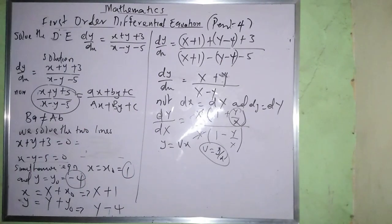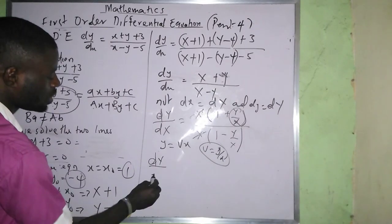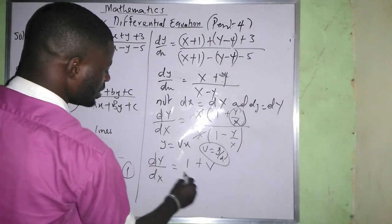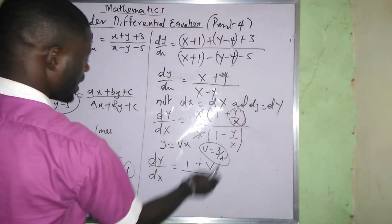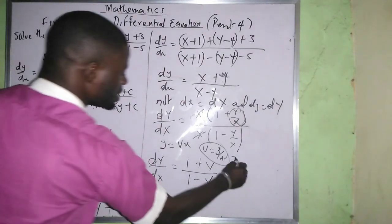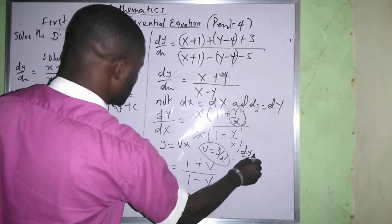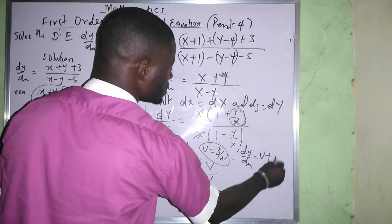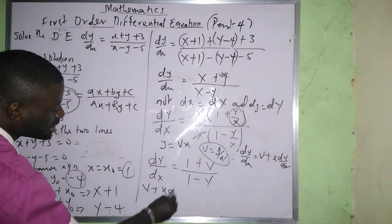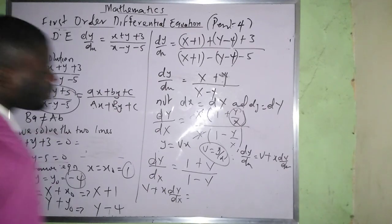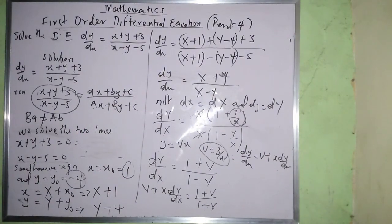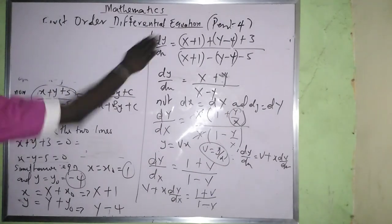Substituting, v + X(dv/dX) = (1 + v) / (1 − v). Rearranging: X(dv/dX) = (1 + v)/(1 − v) − v. This simplifies to a separable equation in v and X.